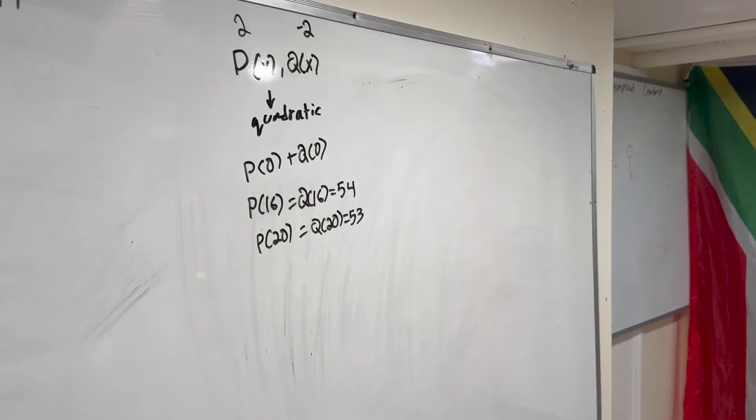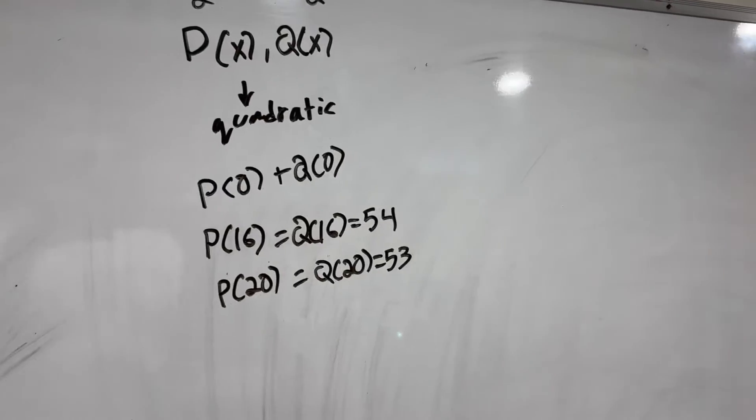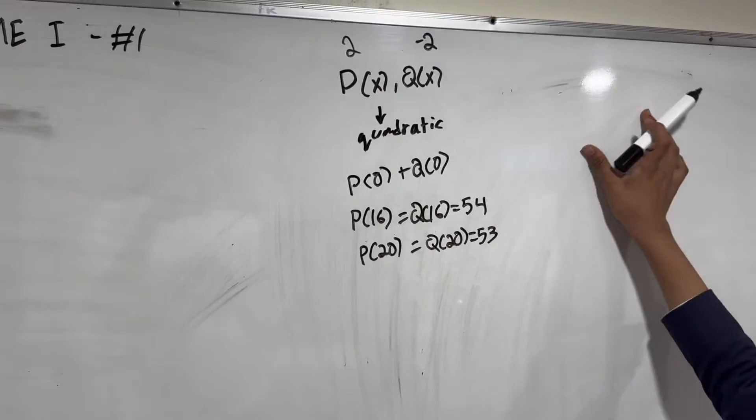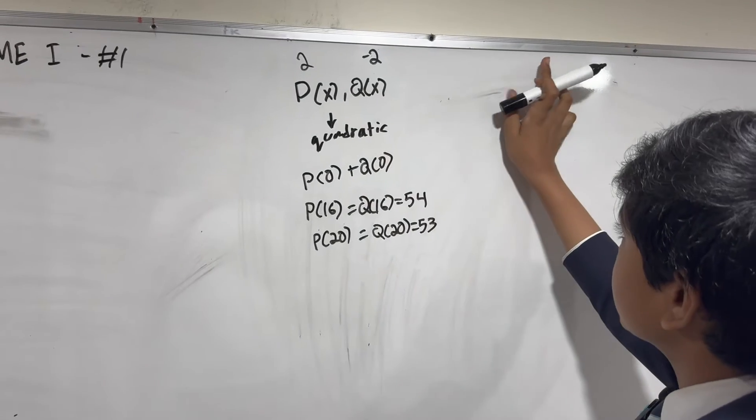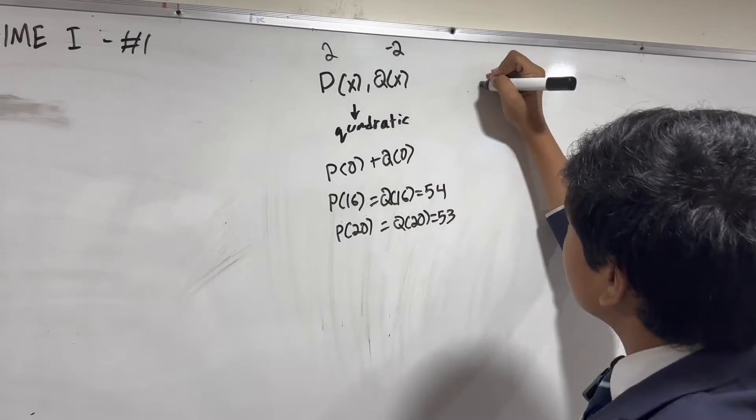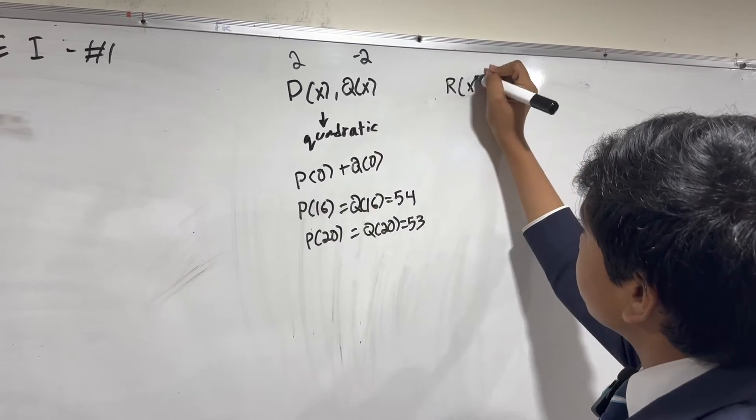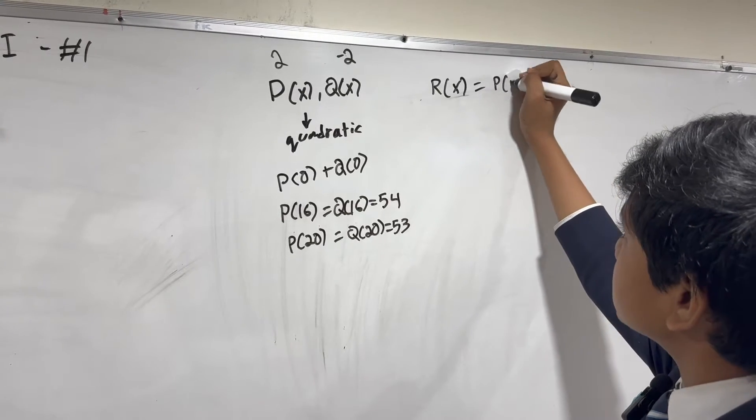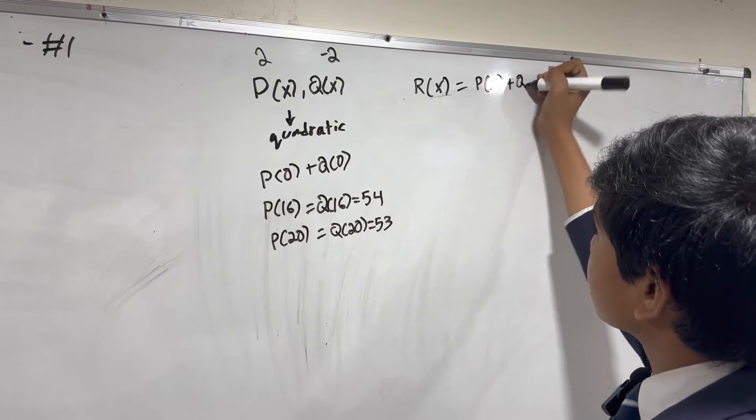Now, you can brute force it with just a system of equations, but there's an easier way to do it that's less vulnerable to mistakes. So, define a new function R of x that's just the sum of the other two.